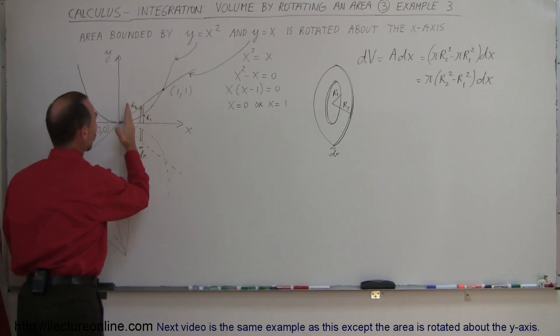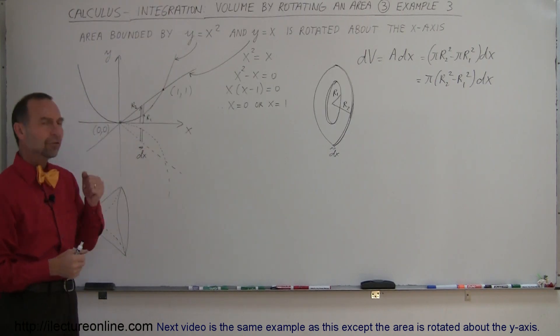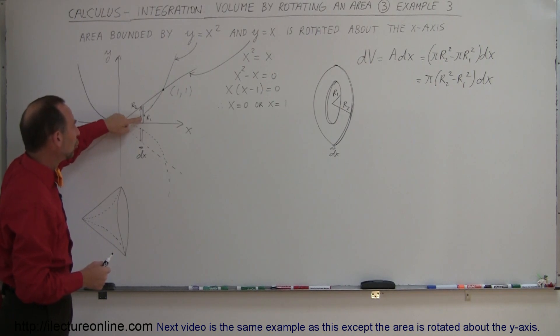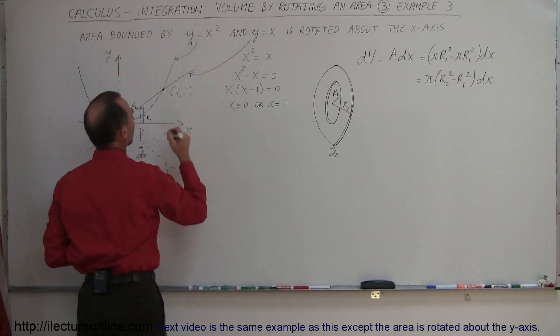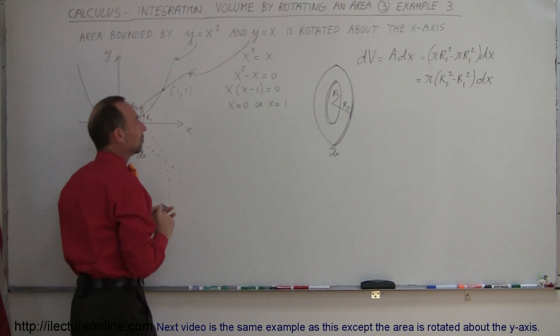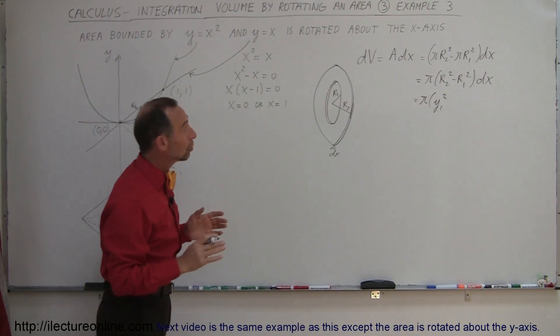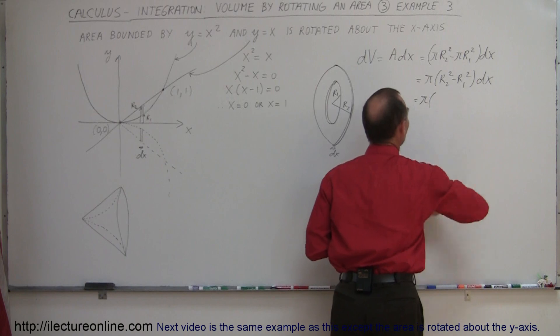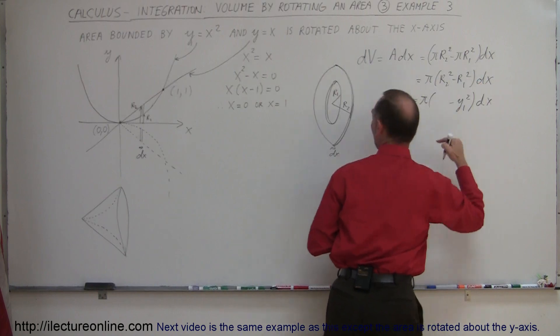That can be written as π times (r2 squared minus r1 squared) times dx. That's a small little volume, and you probably already guessed we're going to integrate all those little washers from here to there—that's a summation, that's what we call an integration. We can't use the variables r; we have to replace that with variables in x and y. The distance from zero to the curved line is this y right there, let's call that y1. So r1 equals the distance from the x-axis to the parabola, which is y1.